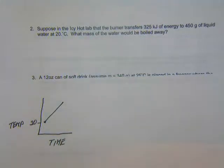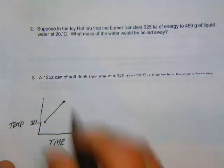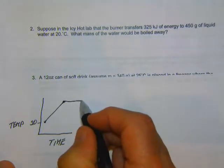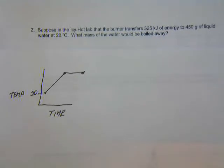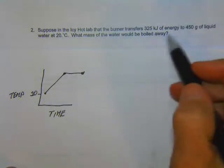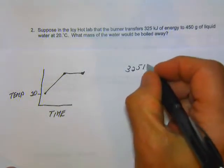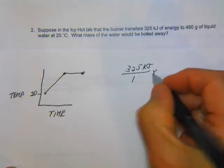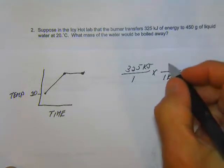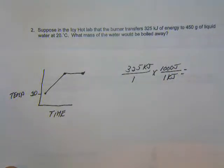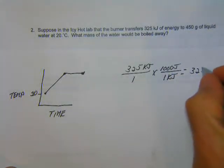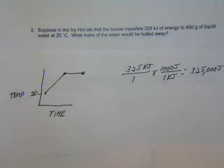We're taking it up to 100 degrees, and then we're going to boil some of that water off. The first thing we do is convert kilojoules to joules. So 325 kilojoules times 1000 joules per kilojoule gives us 325,000 joules. That's the total amount of energy we have to work with.